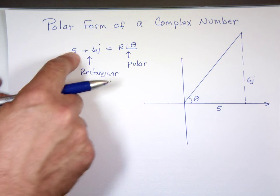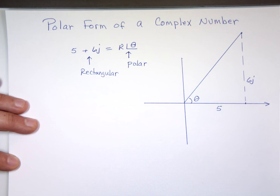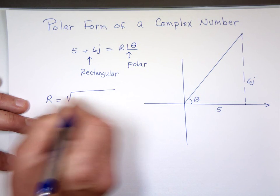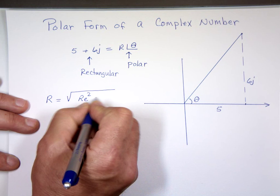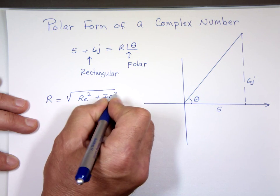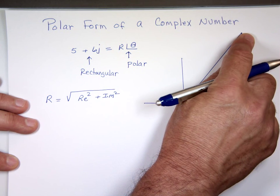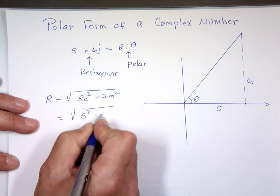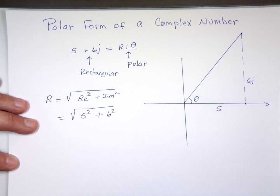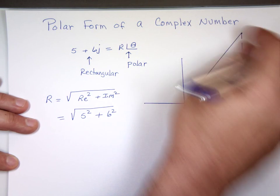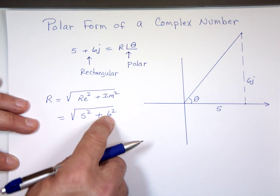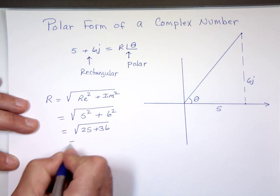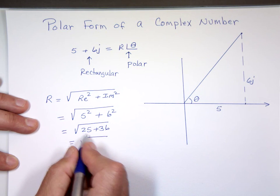How do we go from rectangular, from X and Y, to R and theta? Going back to vectors, R should be, Pythagorean theorem, the square root of the X value, which is, in this case, the real portion squared plus the imaginary portion squared. It's this value squared, that value squared. So R is going to be the square root of the 5 squared plus the 6, not 6j, just the 6. The imaginary portion. The j just told you that's the imaginary. So it's 6 squared. 25 plus 36, which is what? Is that 61?